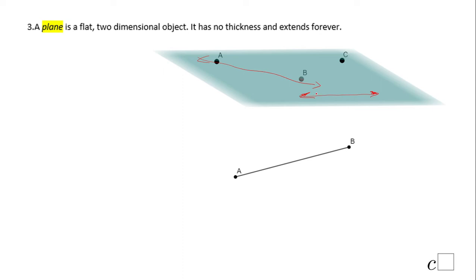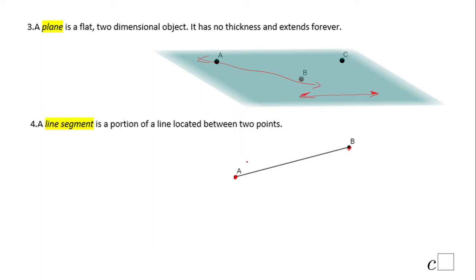The next thing you see here looks very similar to the others, however it is different. This one has what we call endpoints. The previous line doesn't have endpoints — it has points A and B on it, but in this case A and B are the endpoints of this segment, or line segment. This is the line segment AB. Take a look at the notation — this is the notation for line segment AB, and you can also call it BA, that's not a problem.